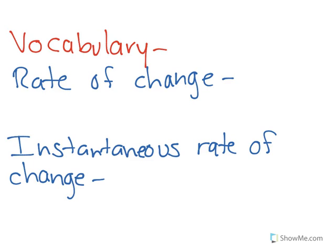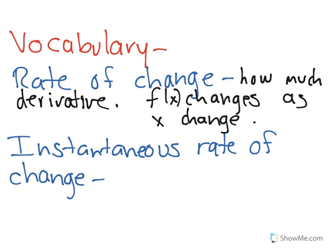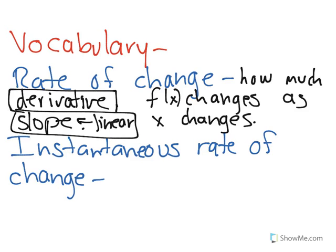Rate of change is basically the derivative. The rate of change of a function is how much f(x) changes as x changes, which is also our definition of a derivative. In a linear function that's the slope, but otherwise we'll call it the derivative.